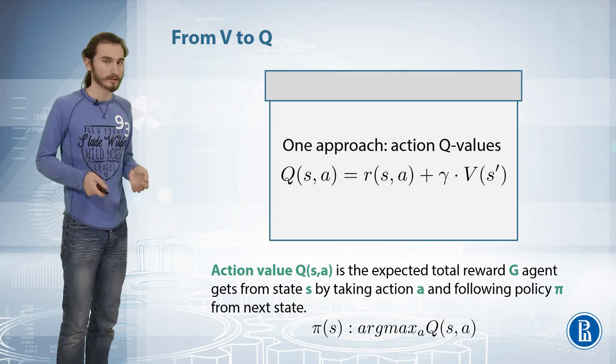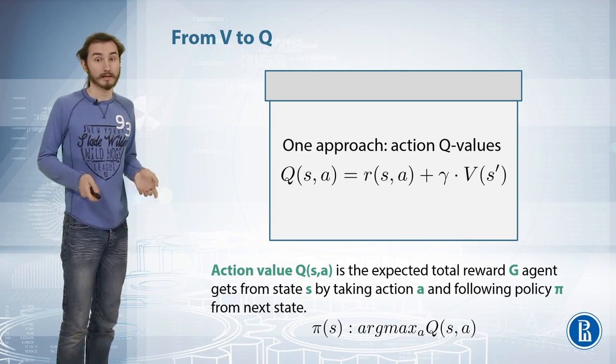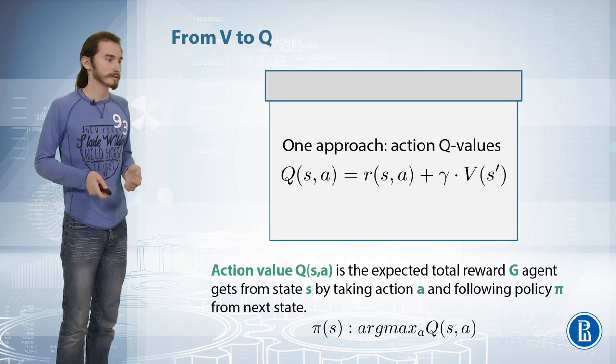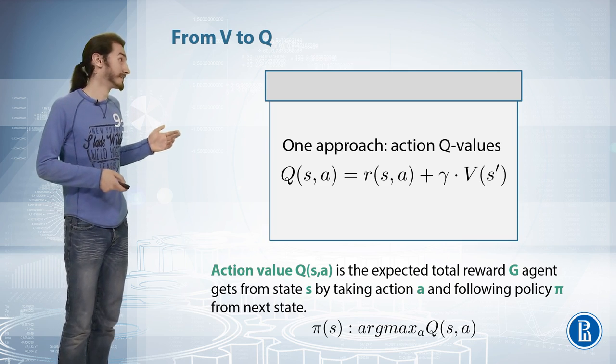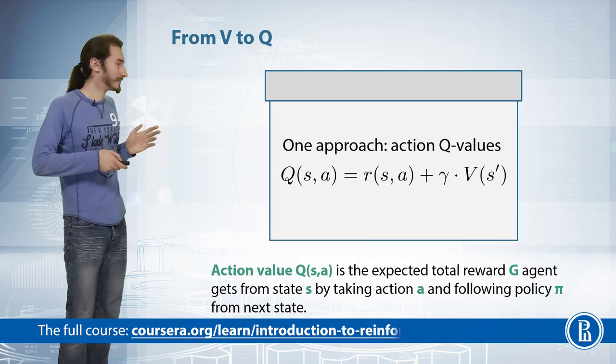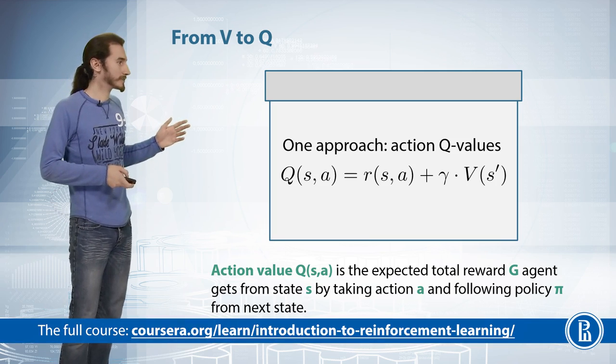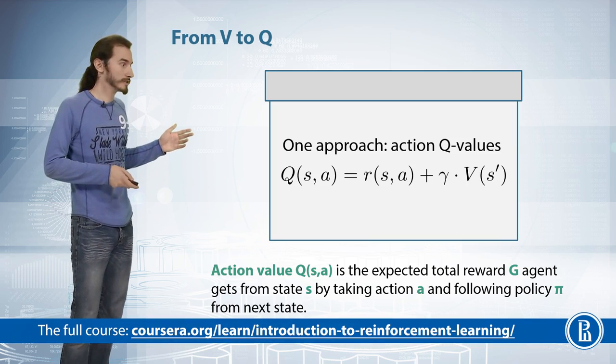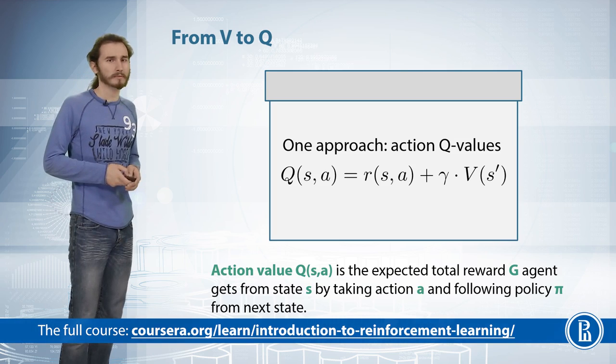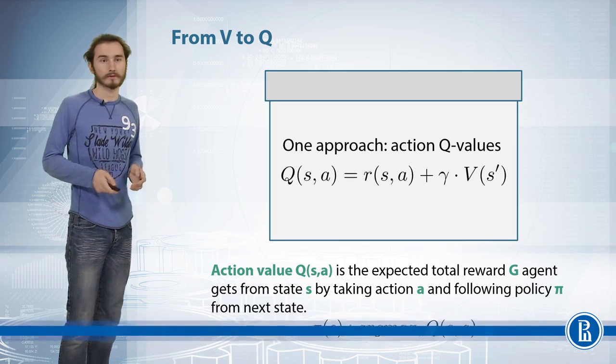So the cool part about Q function is that if you know this Q function, this by definition gives you access to an optimal policy given it's deterministic. And the Q function itself is very easy to express in terms of V function. So this neat formula, if only with an expectation for stochasticity, gives you a way to estimate Q function. And if you kind of unroll the V term here as an expectation of action values over the policy, you'd get a recurrent formula for Q function. This is all probably unknown information for you since you've gone through the last week.